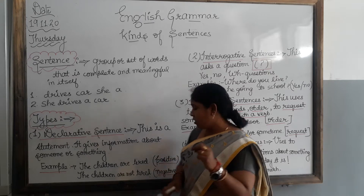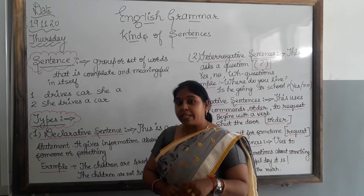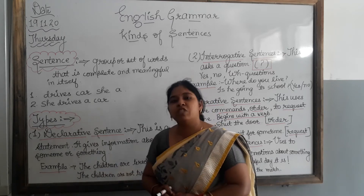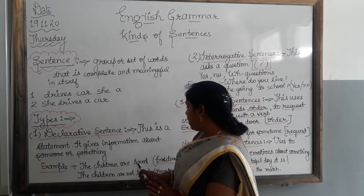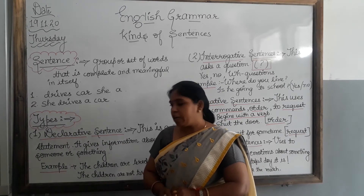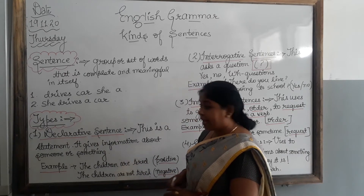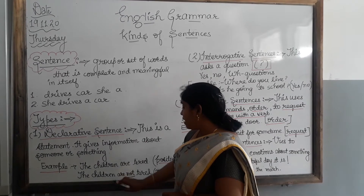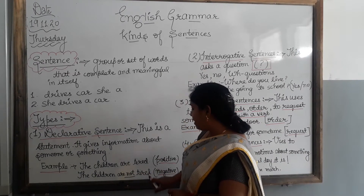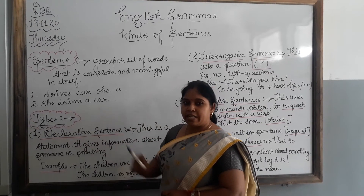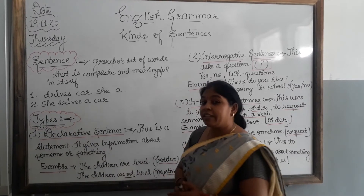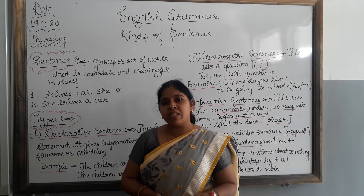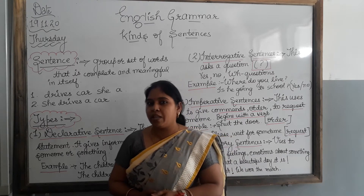Declarative sentences are of two types: positive and negative. When there is no negation in a sentence — 'The children are tired' — that is a positive statement, making it a positive declarative sentence. When we add 'not' — 'The children are not tired' — it becomes a negative sentence with negation, making it a negative declarative sentence. So in declarative sentences we have two types: positive, meaning a positive statement, and negative, meaning a negative statement in which 'not' is present.